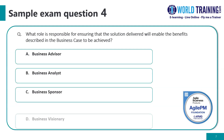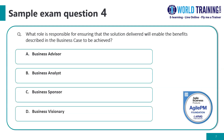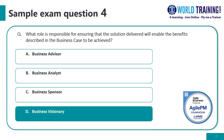Question number four: what role is responsible for ensuring that the solution delivered will enable the benefits described in the business case to be achieved? The correct answer is D. It is usually the visionary who is responsible for ensuring that the solution delivered will enable the benefits described in the business case to be achieved.